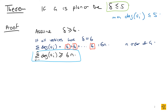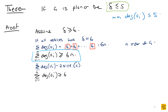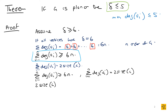We also know from the handshaking theorem that the sum of the degrees of all vertices equals two times the size of the graph. So we have: the sum of degrees ≥ 6n, and since the sum equals 2|E|, it follows that 2|E| ≥ 6n.